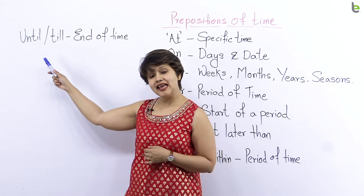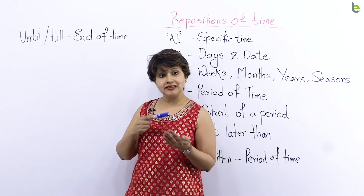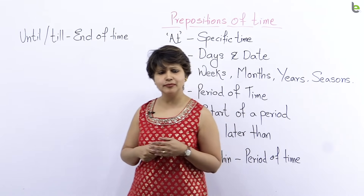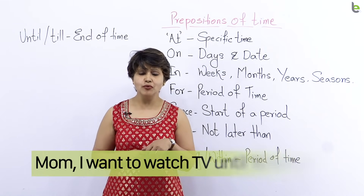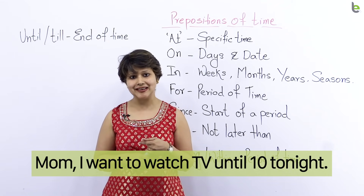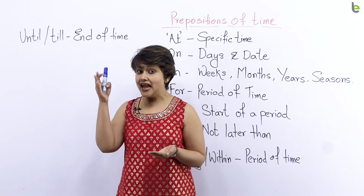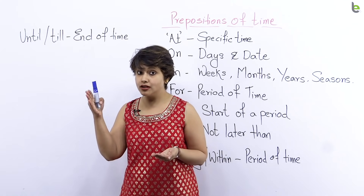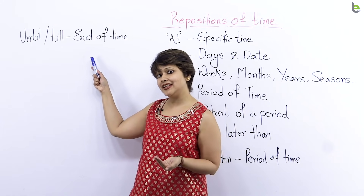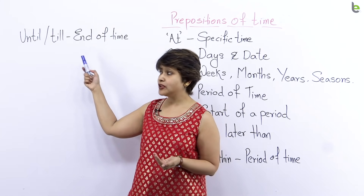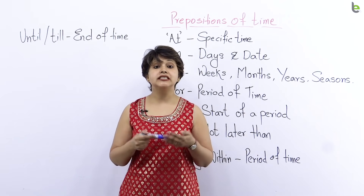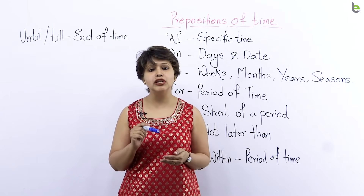UNTIL ya TILL. Ye ek aisa preposition hai jo aapko batayega ki koi bhi ghatna kab khatam hui — it'll tell you the end of time. For example: 'I want to watch TV until 10 tonight.' Mama, mujhe aaj raat ke 10 bajay tak TV dekhna hai. Meinne end time express kiya — kab tak main us ghatna ko karungi. Dono — until aur till — ke maayne same hote hain, doston. Agar aap until use karna chahte hain, go ahead. Agar aap until ki jagah pe till use karna chahte hain, toh bhi aapka sentence bilkul correct hoga.